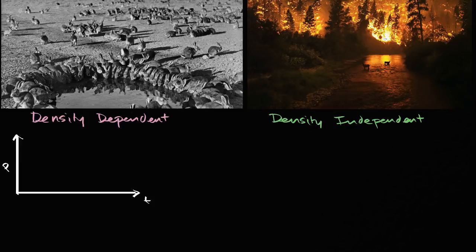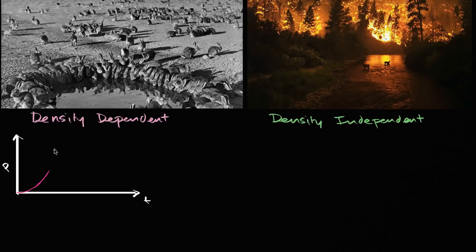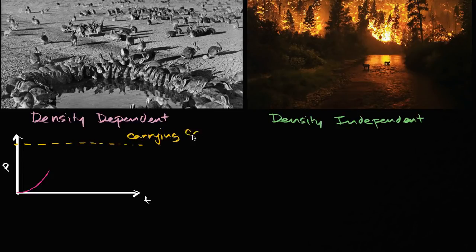In previous videos, we talked about a population — I like to use the example of rabbits — and how it could grow exponentially. If it's just growing a certain percent every month, that population will grow exponentially. But we can't expect that to just happen forever. If rabbits just kept growing exponentially, it wouldn't take long for them to cover the surface of the earth. But we know that they are limited by things, and so the environment only has a certain amount of carrying capacity.